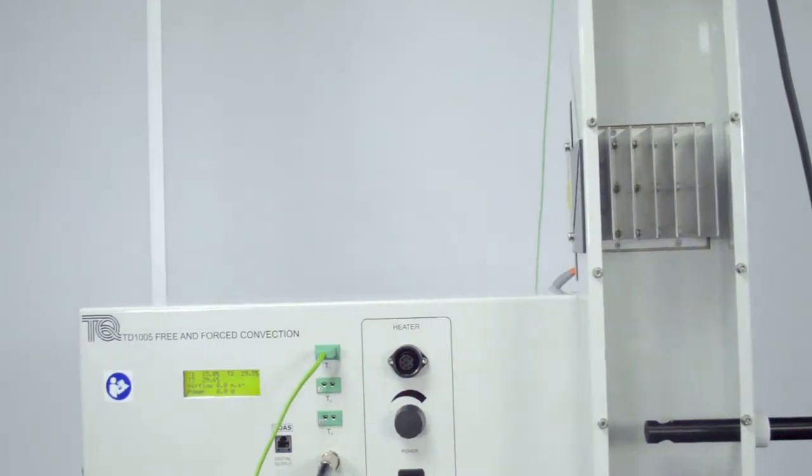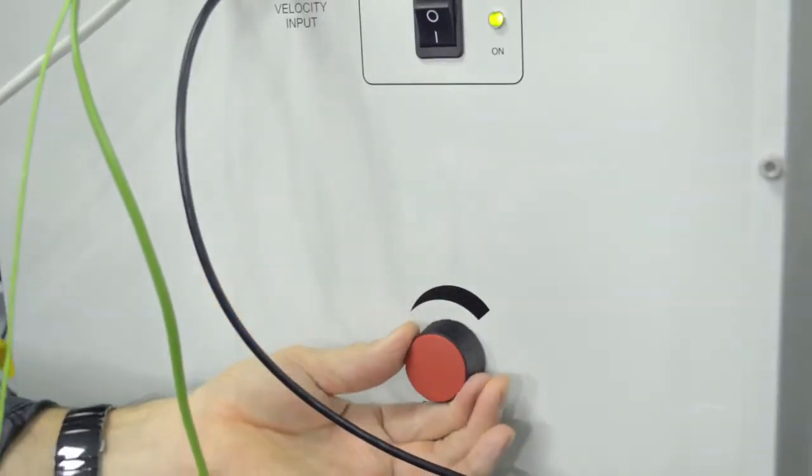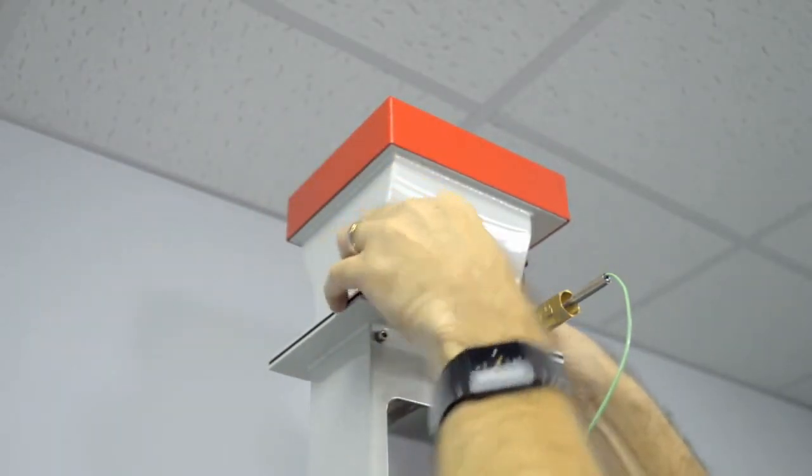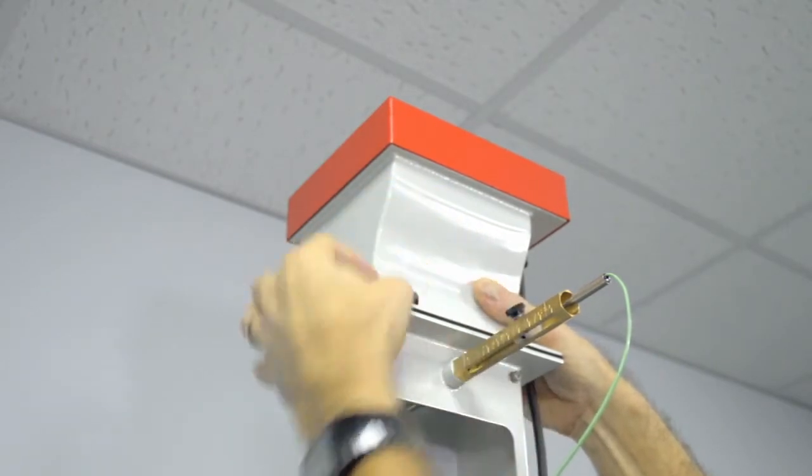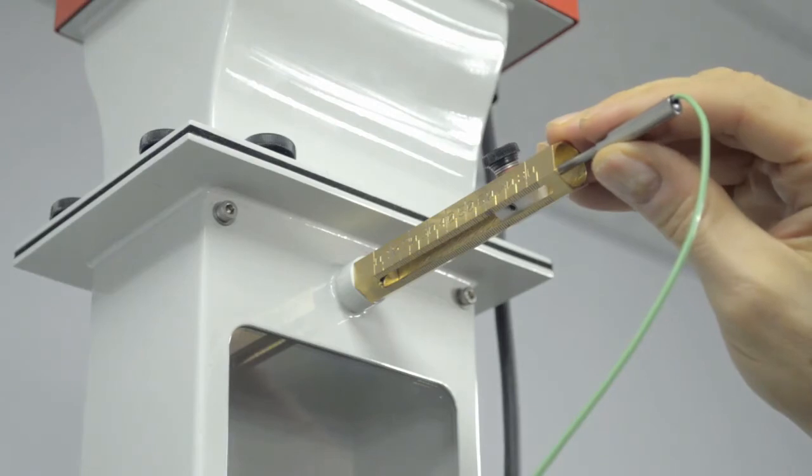Two controls allow students to set different air velocities and heater power for a full range of tests. For free convection tests, the heated air rises from the surface and up the duct. For forced convection tests, a variable-speed fan draws air up through the duct and across the surface.